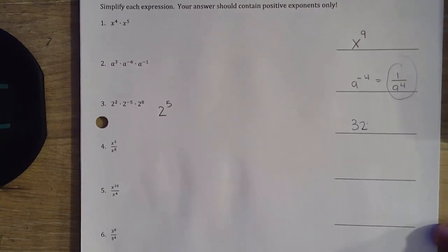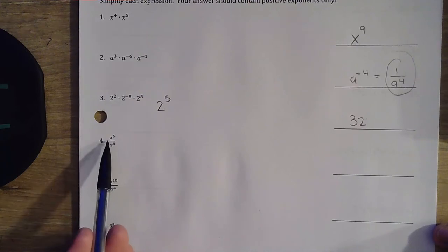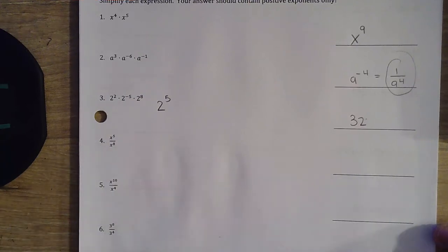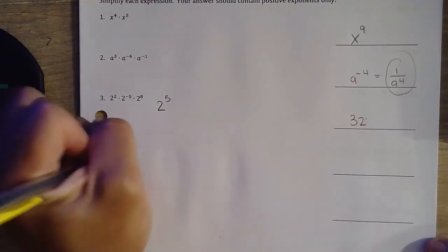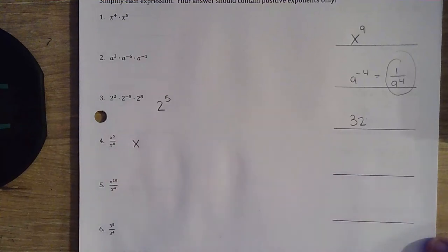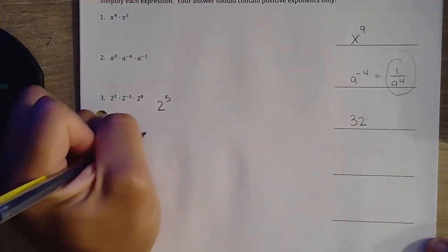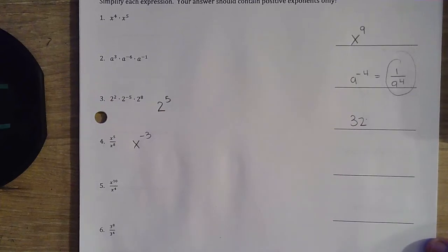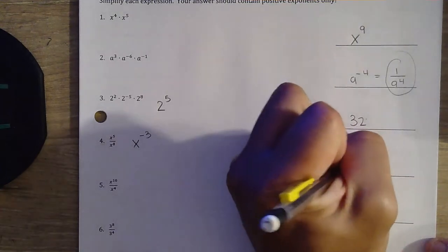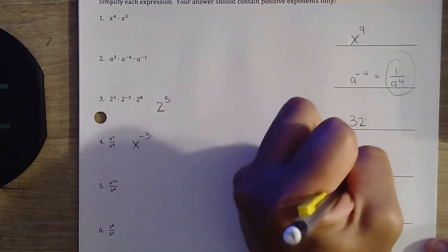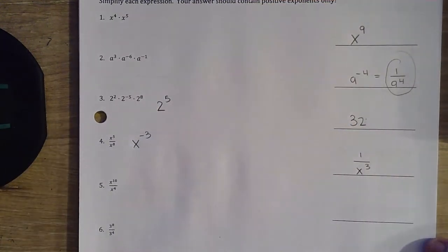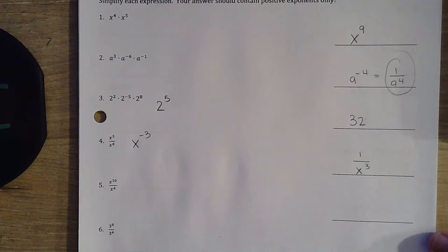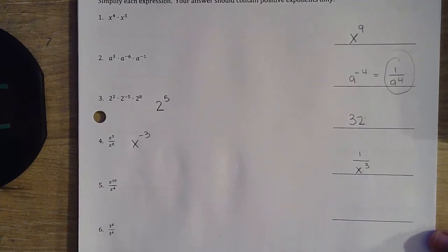Question number 4. We know that when we have the same base and we're dividing, we subtract those exponents. So an exponent of negative 3 — 5 minus 8 gives us negative 3. And remember, we don't want negative exponents, so we make it a fraction and we move it to the bottom. So 1 over x to the 3rd power. When you move it to the bottom, we make that a positive.